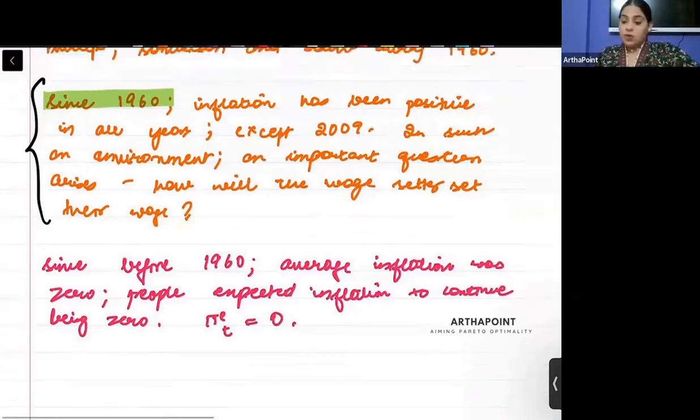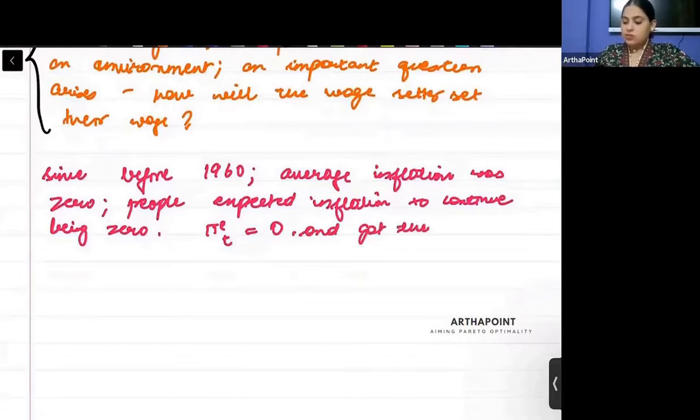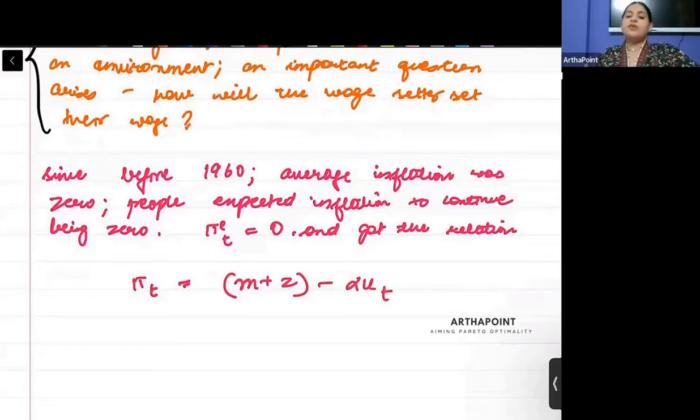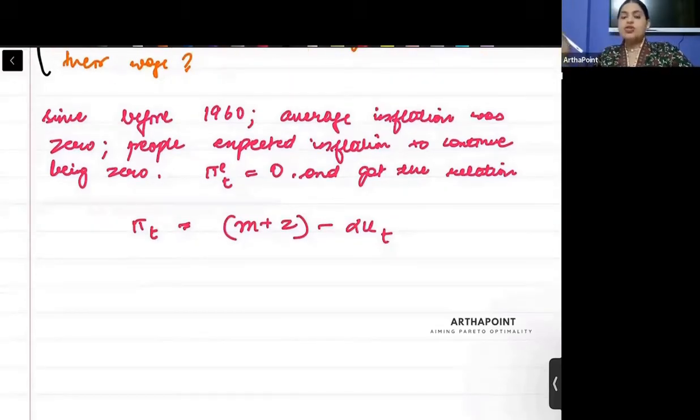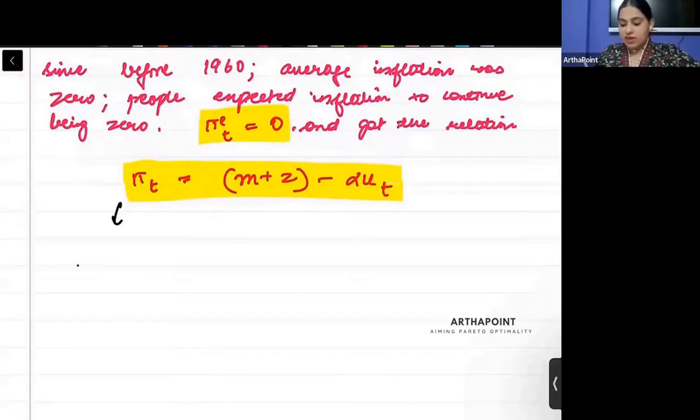So since before 1960 average inflation was zero, people expected inflation to continue being zero. So they just put π^e equal to zero and got the relation π_t = m + z - αu_t. This is exactly the relationship that they found in UK and US. Phillips found it in UK, and Solow and Samuelson found it in US. They found this negative relation but didn't talk about expected inflation at all.